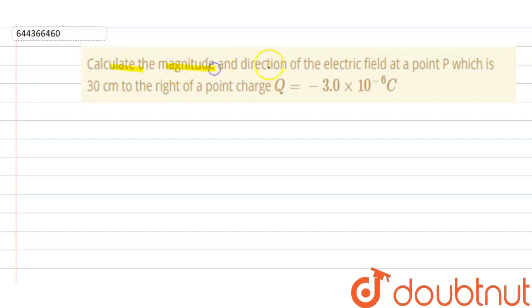Calculate the magnitude and direction of the electric field at a point P which is 30 centimeters to the right of a point charge Q that is -3.0 × 10^-6 coulombs.